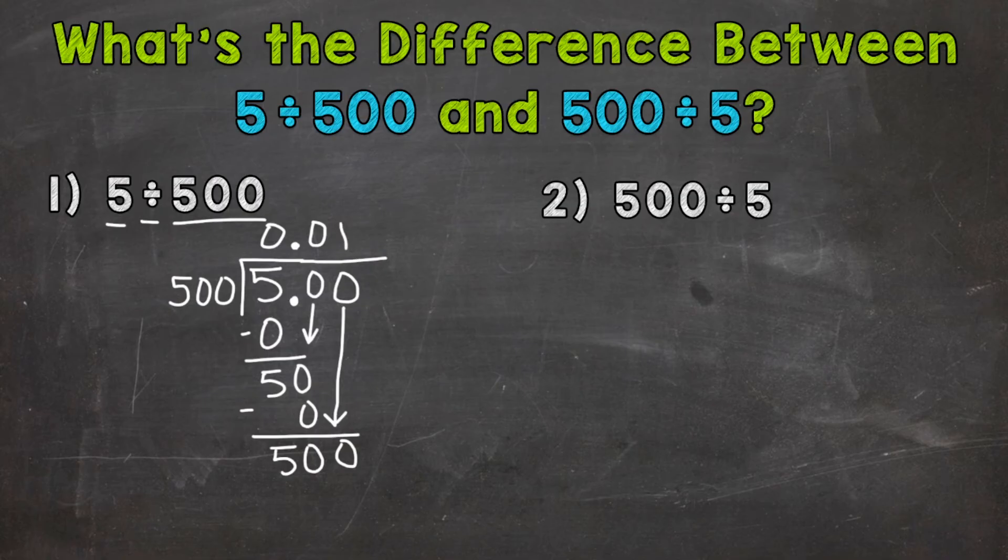And we have 500 divided by 500. So how many whole groups of 500 out of 500? Well, 1. 1 times 500 is 500. Subtract. And we get 0. So our answer is 1 hundredth.